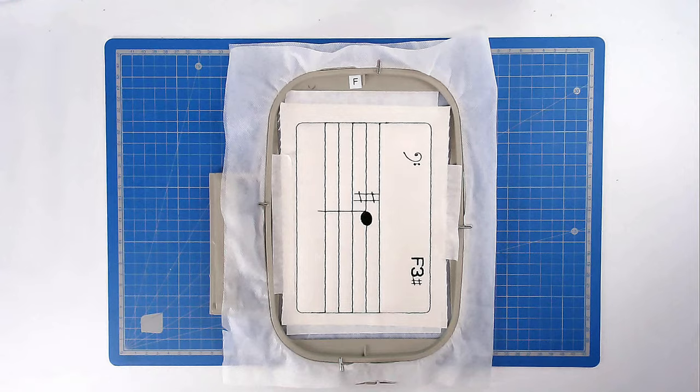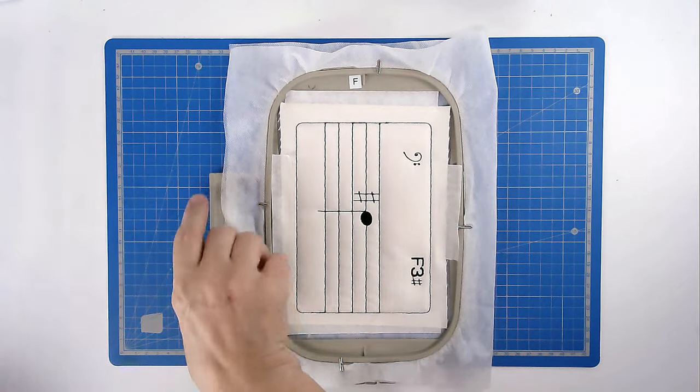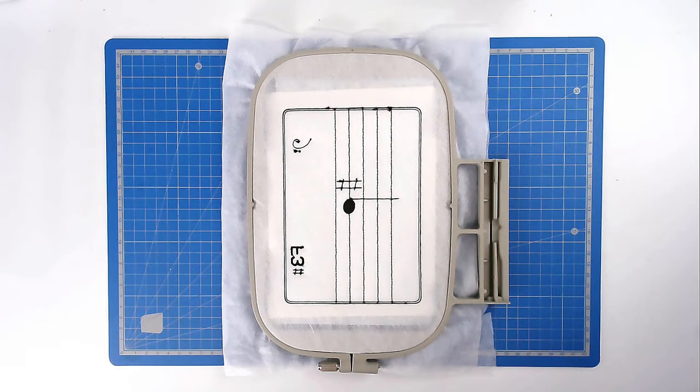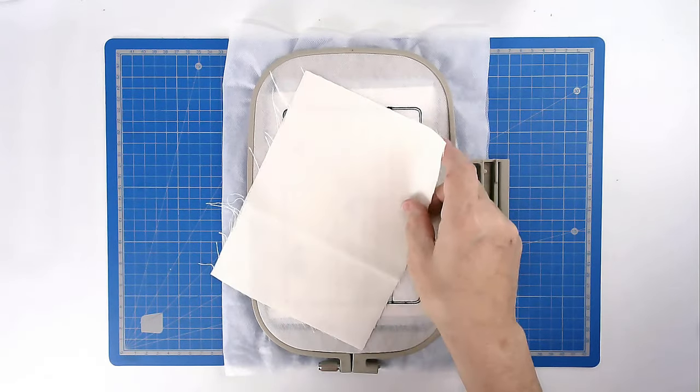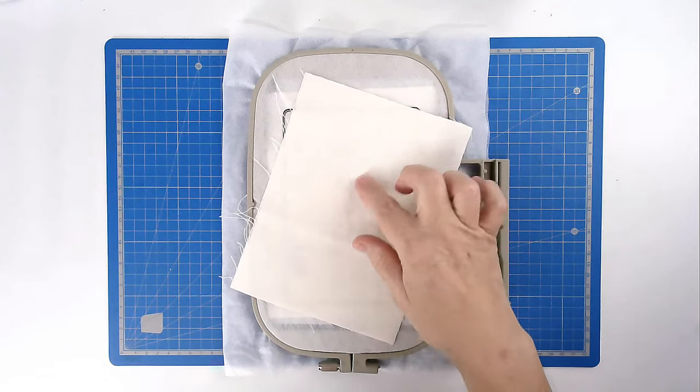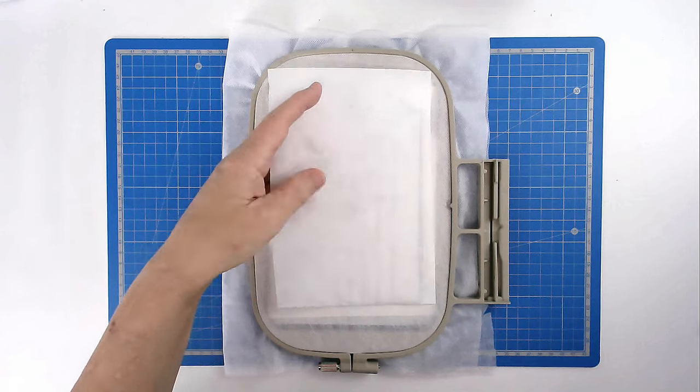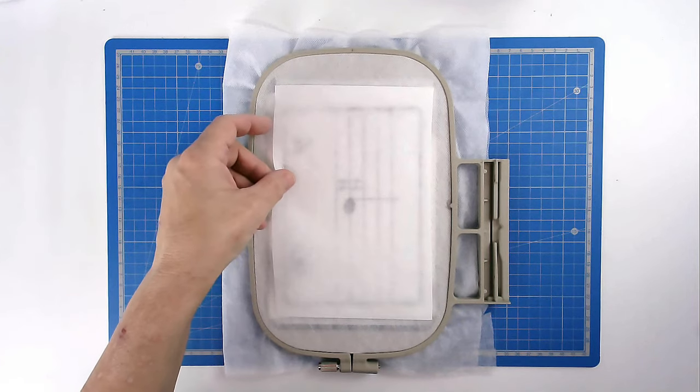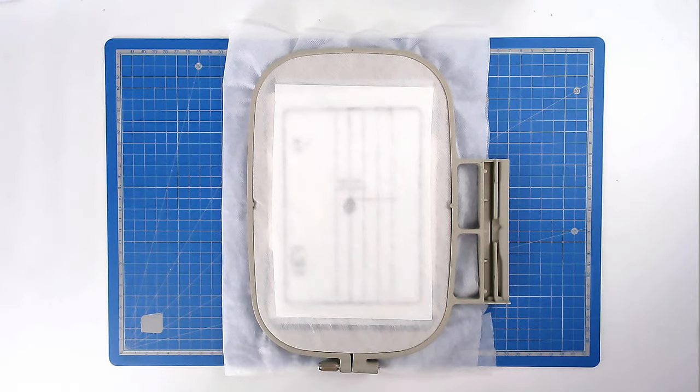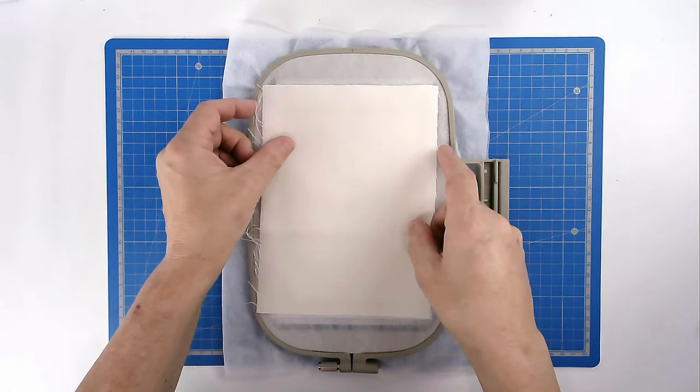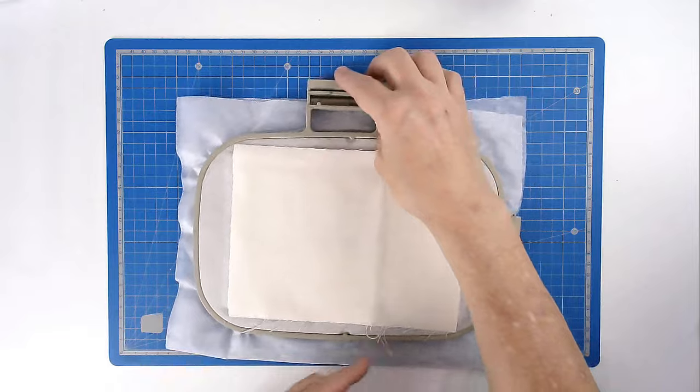It's now time to add our backing fabric so turn your hoop over. And because I've got a really dark colored thread and a very light colored fabric, the chances are it's going to show through. So I'm placing a layer of cutaway stabilizer over the outline before I add my backing fabric. And then I'll just place that right over the top. And then we're going to tape that in place.